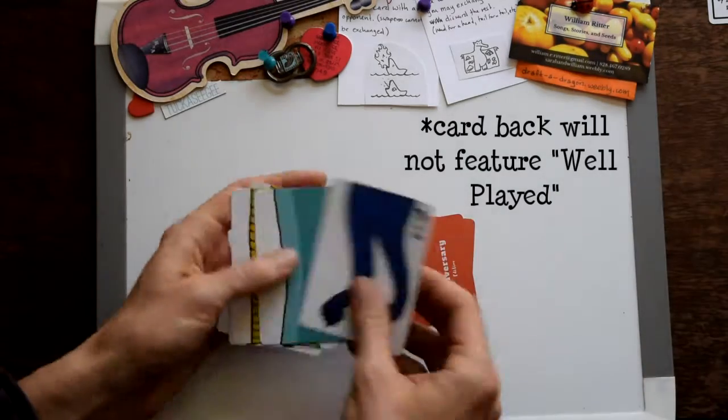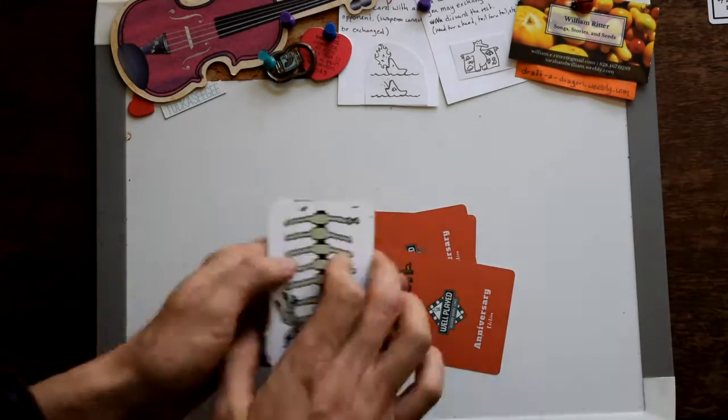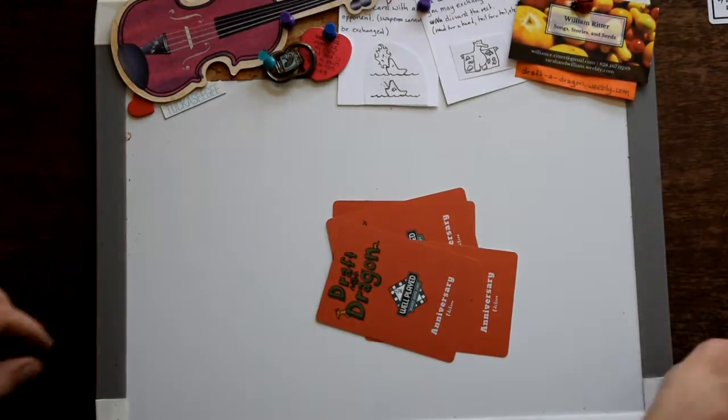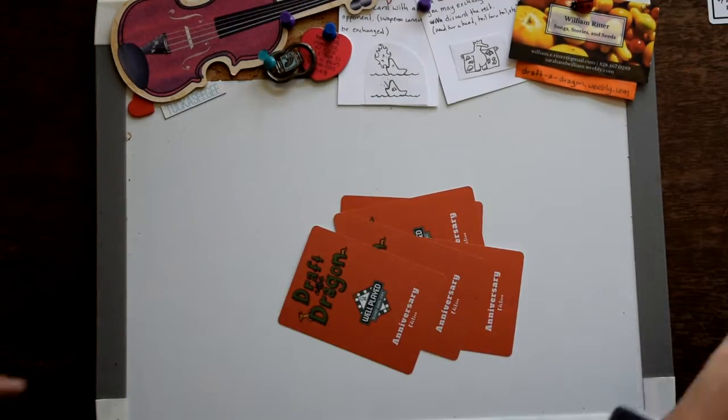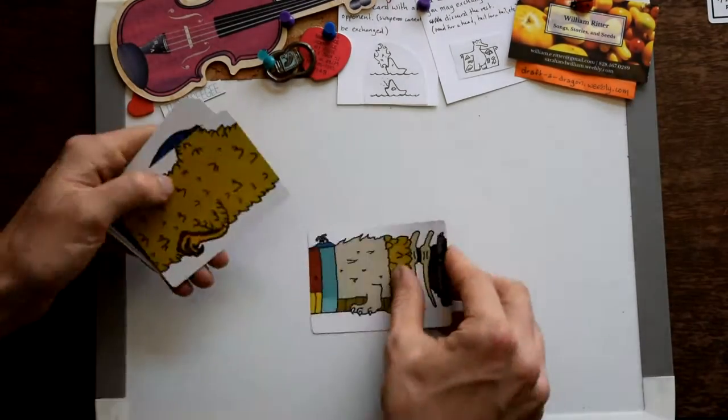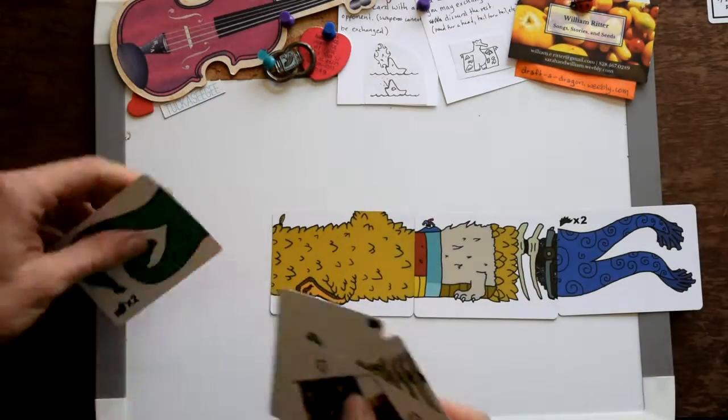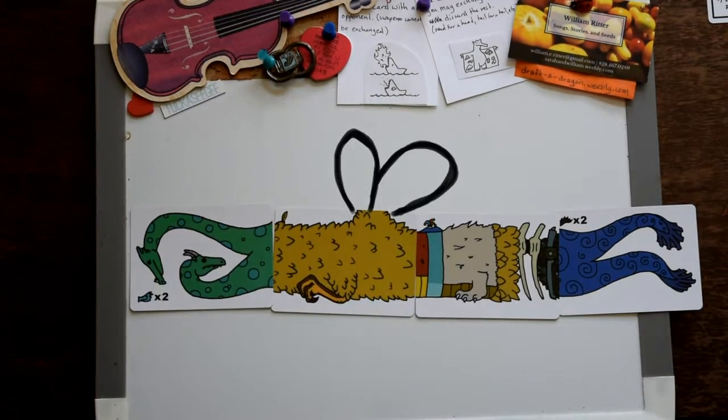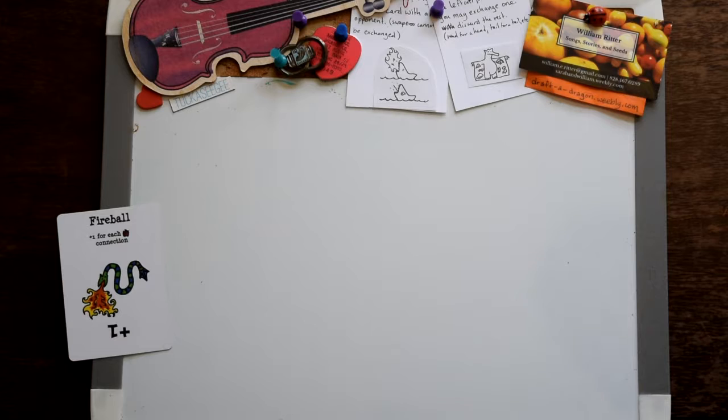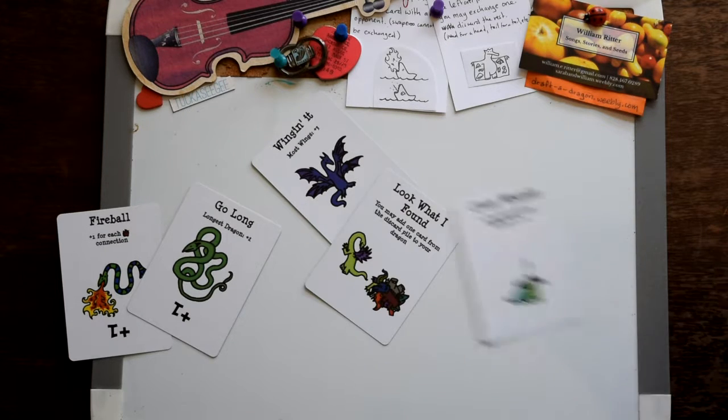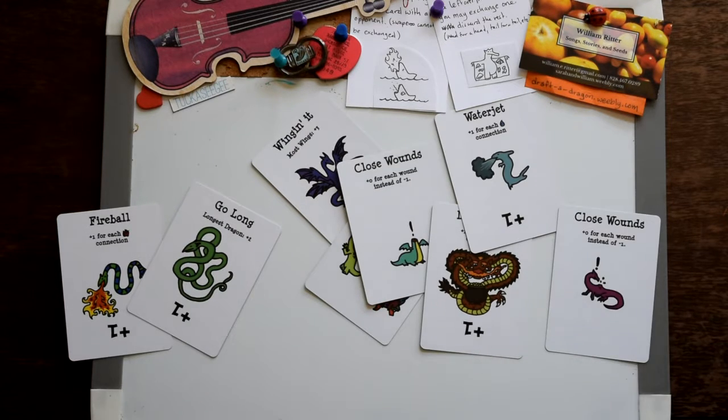And it's pretty simple. You get seven cards and you pick one you want to keep. Then you pass your hand and you keep doing that. Rinse and repeat until you get down to seven cards again. And then you build your dragon. Hopefully you were smart and got wings. I didn't. You also draft what are called the action cards, and they add a little bit of whimsy and some artistic flair to the game.